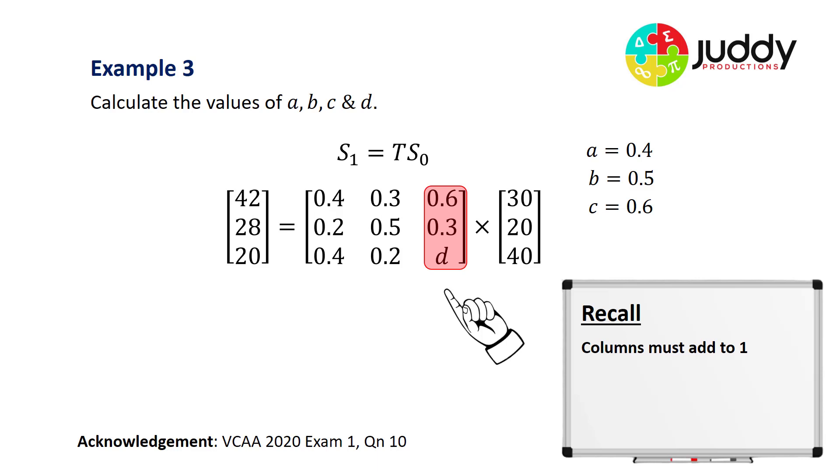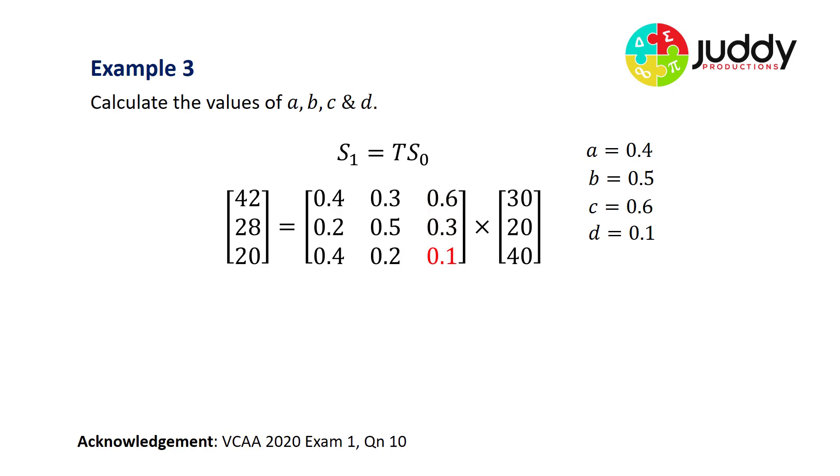I can simply go back to summing my columns to find the answer for D. In column three, I've got 0.6 plus 0.3 plus D equals one. Now 0.6 and 0.3 give me 0.9, and 0.9 plus D gives me one. So D must equal 0.1. Here we have our final value, D equals 0.1, and we fill that in.